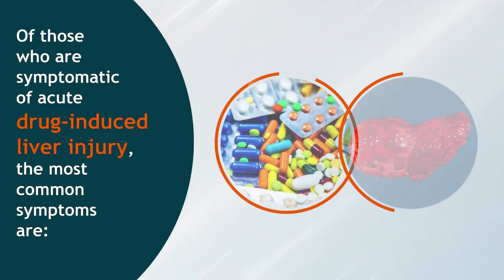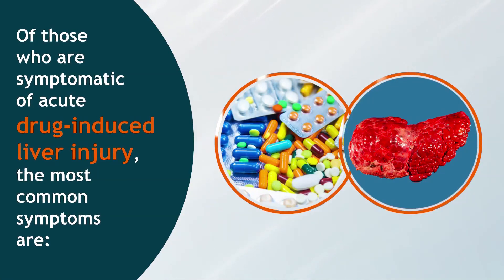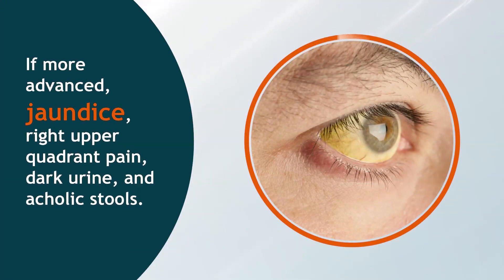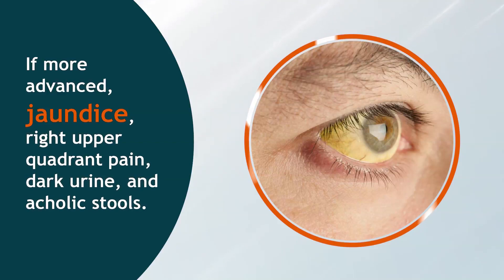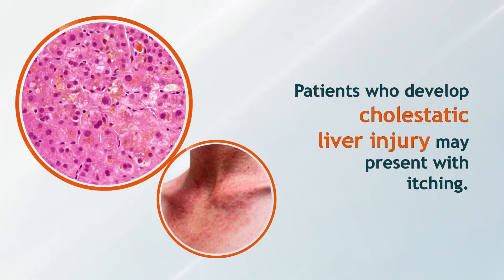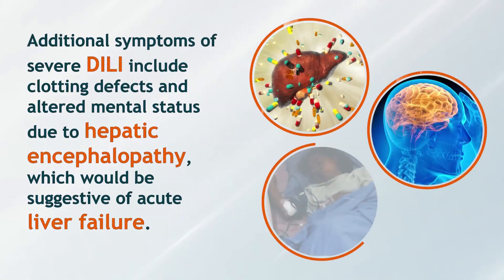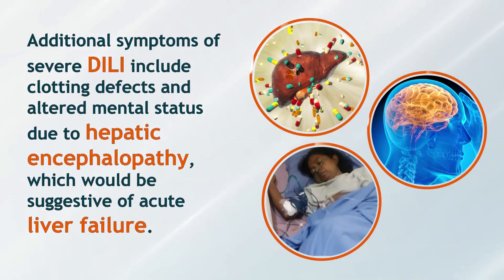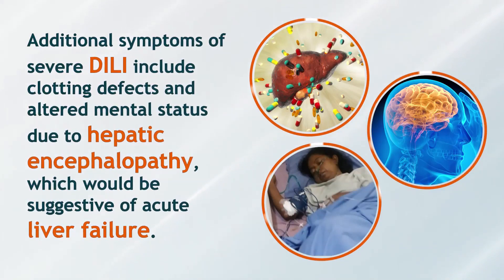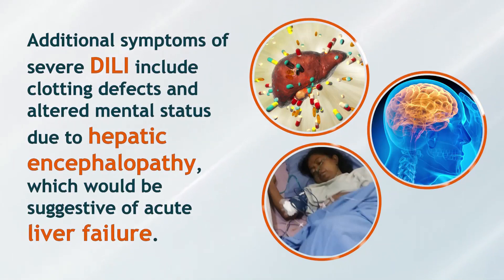Of those who are symptomatic of acute drug-induced liver injury, the most common symptoms are fever, general ill feeling, nausea, and vomiting. If more advanced: jaundice, right upper quadrant pain, dark urine, and acholic stools. Patients who develop cholestatic liver injury may present with itching. Additional symptoms of severe DILI include clotting defects and altered mental status due to hepatic encephalopathy, which would be suggestive of acute liver failure.